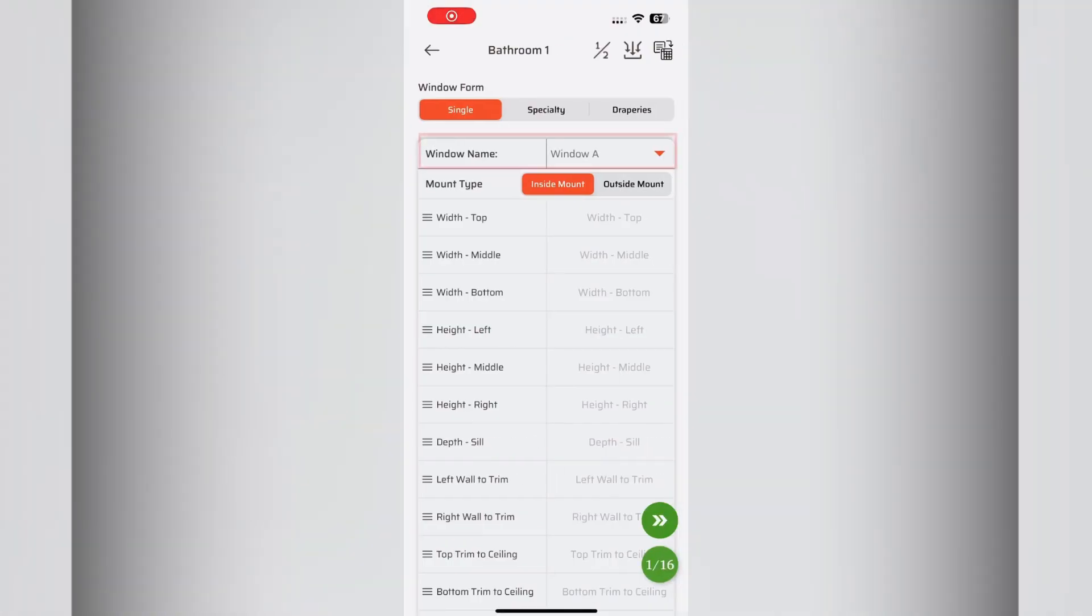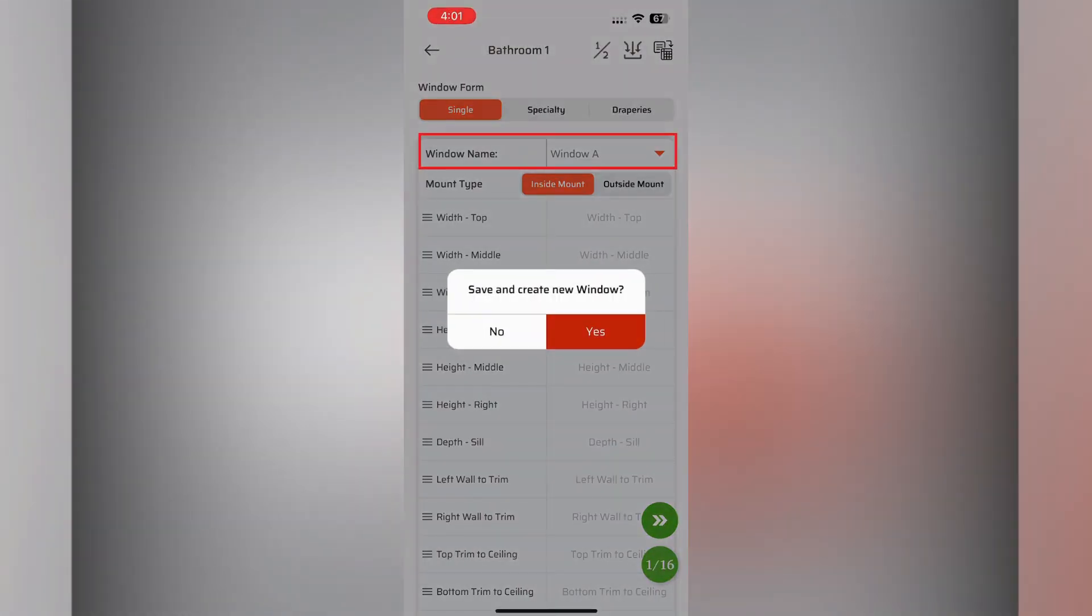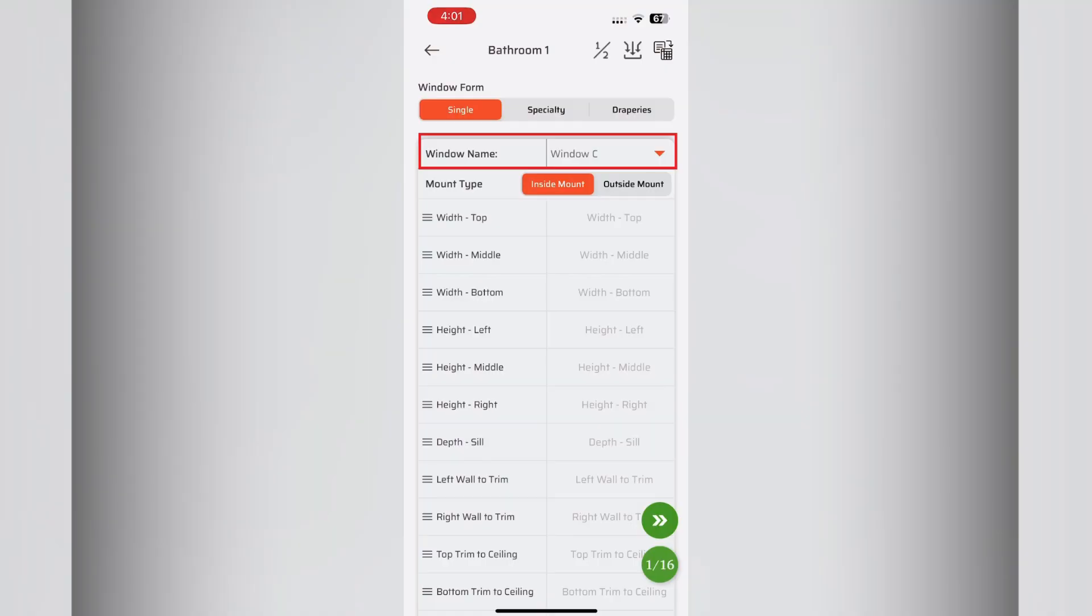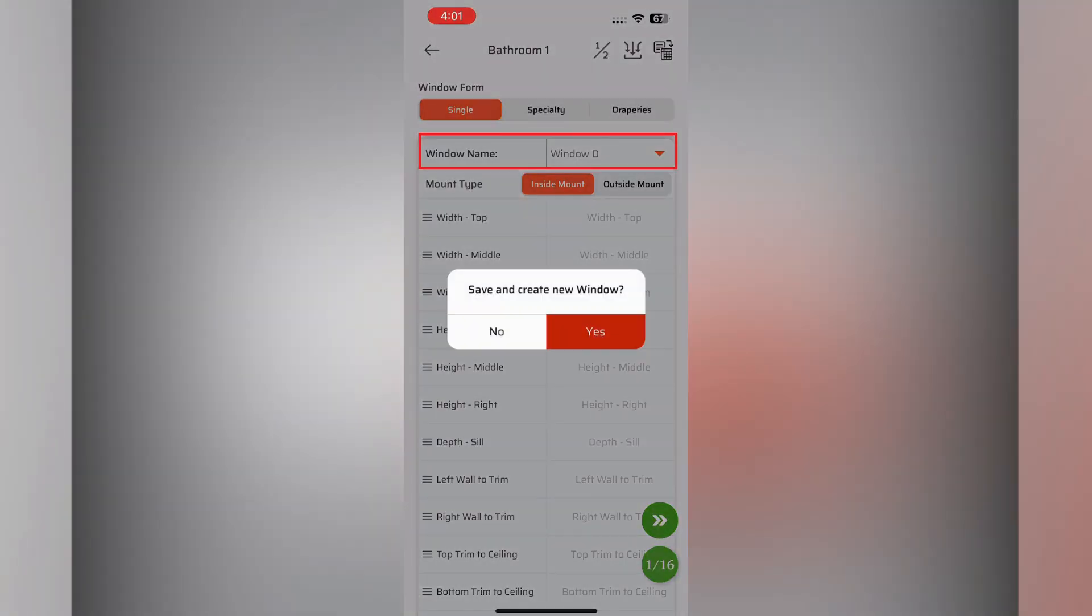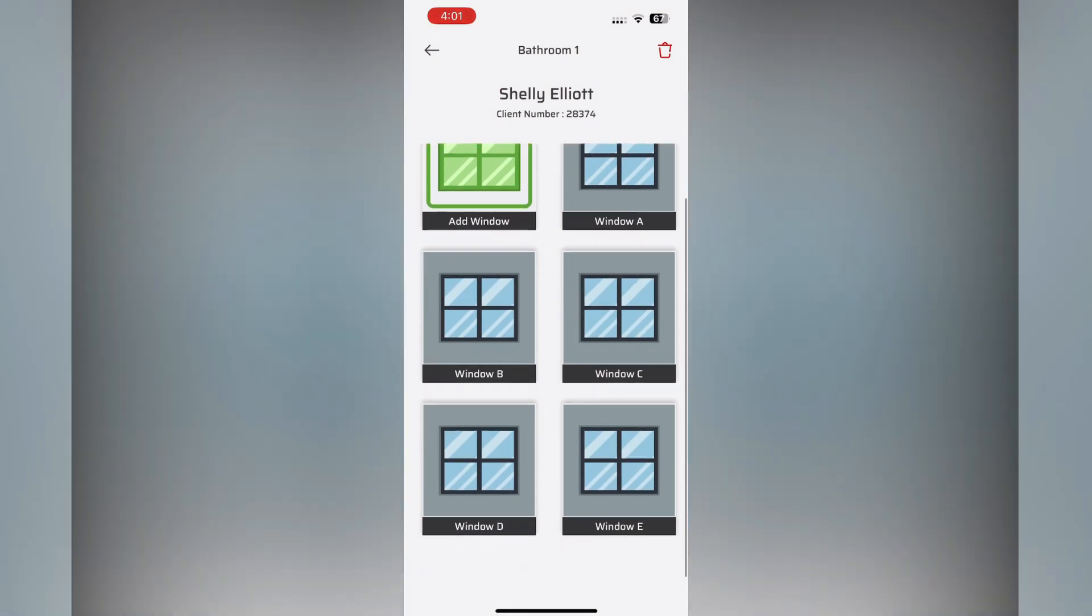The app starts the first window in each room automatically named window A. Each time you press the next or new window button, the window name will automatically increment. This is intended to help you save a lot of time.